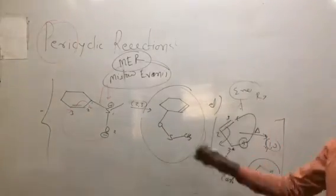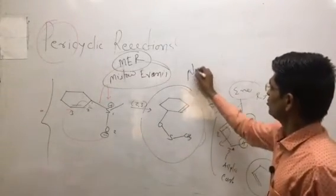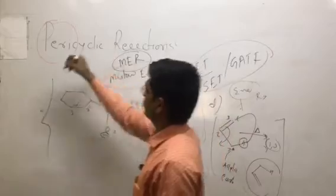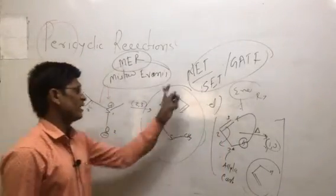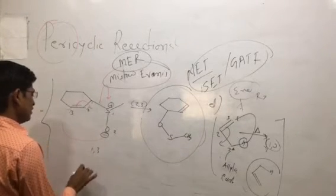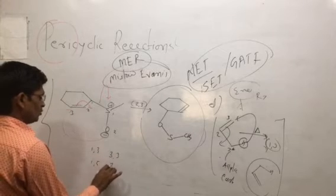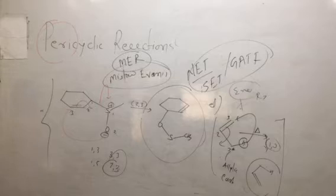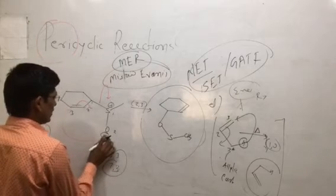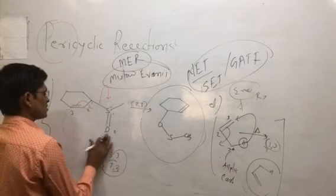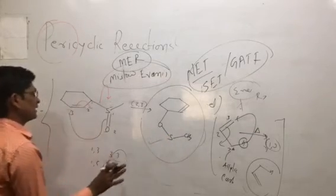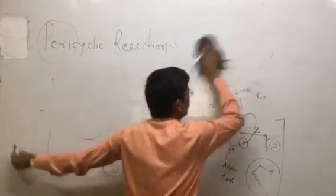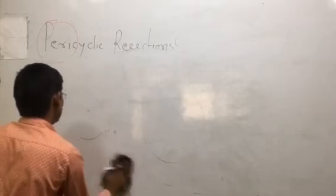As already explained: electrocyclic reaction, cycloaddition reaction, and sigmatropic reaction. These topics are most important for competitive exams — NET, SET, and GATE exams. The most important subtopics are: 1,3-shift, 1,5-shift, [3,3]-shift, and [2,3]-shift. One example remaining from the [2,3]-shift is the Sommelet-Hauser reaction. These types of questions are asked in competitive exams oriented to NET, SET, and GATE.